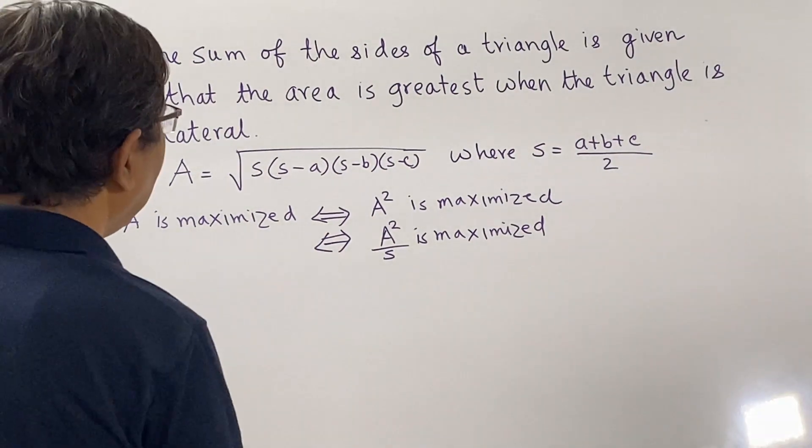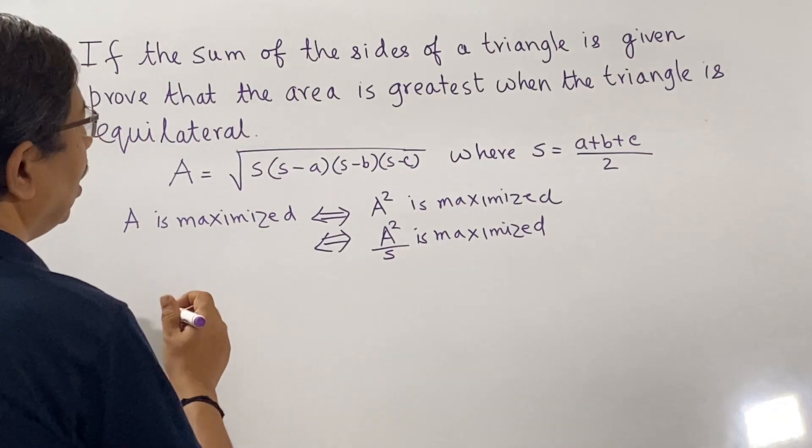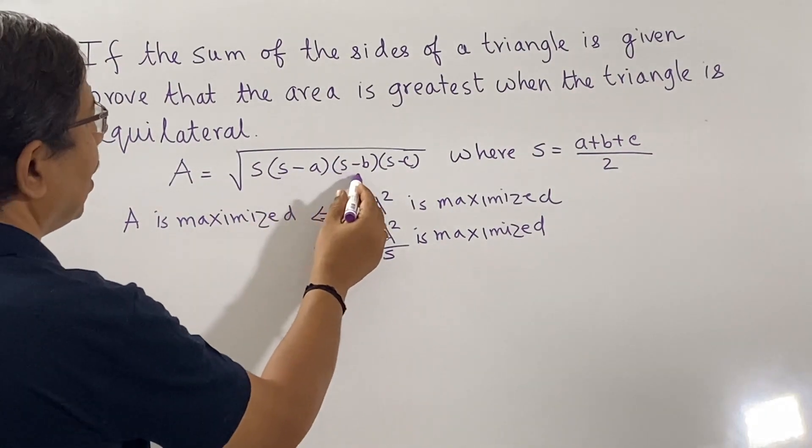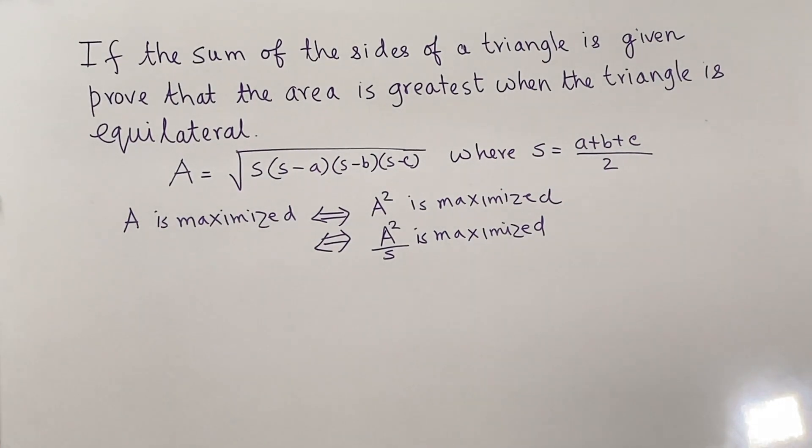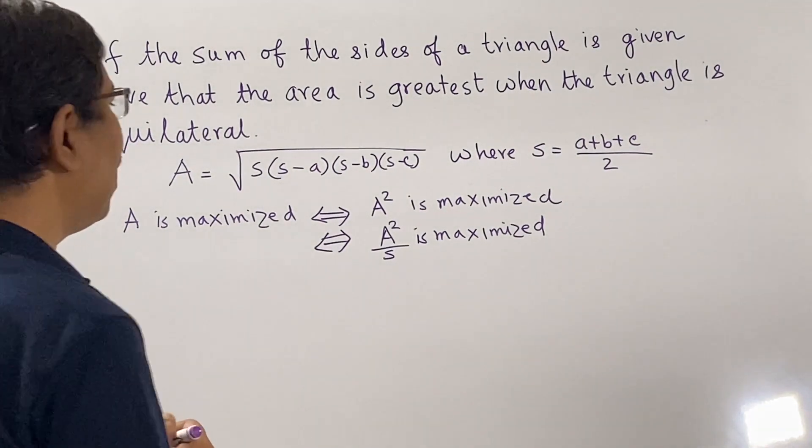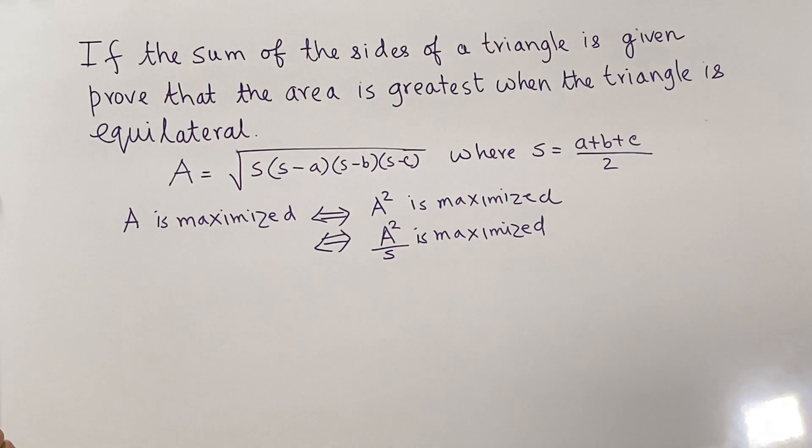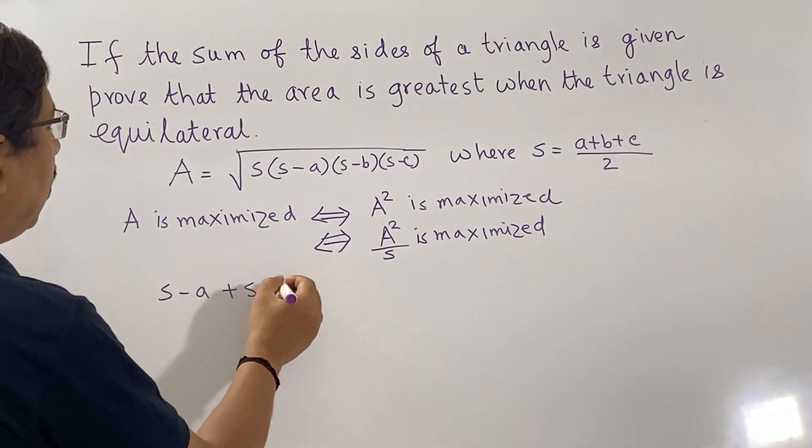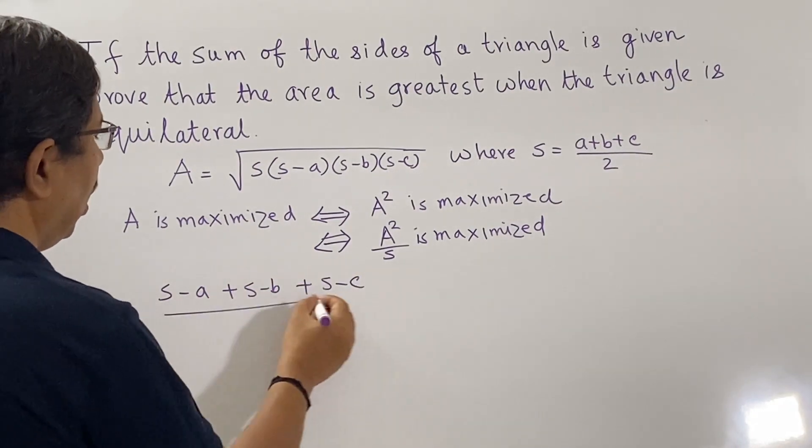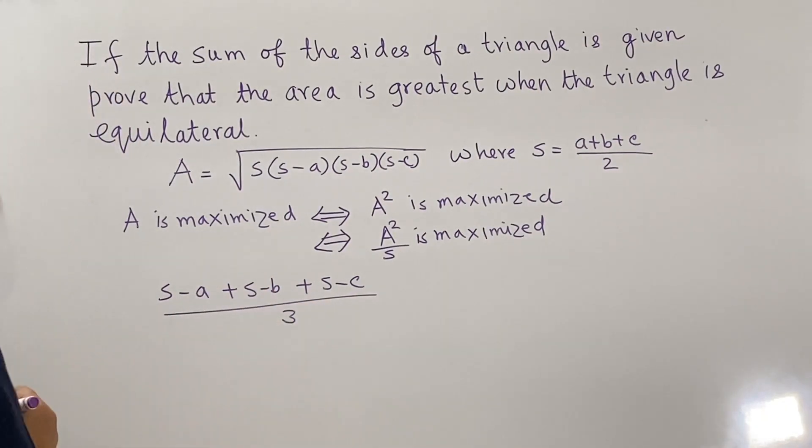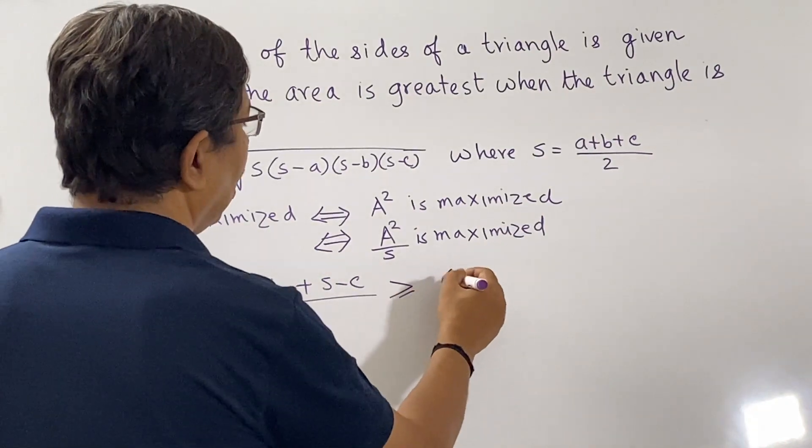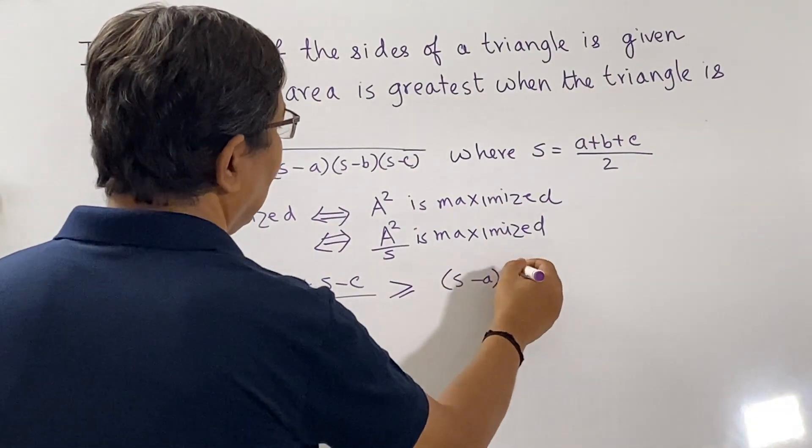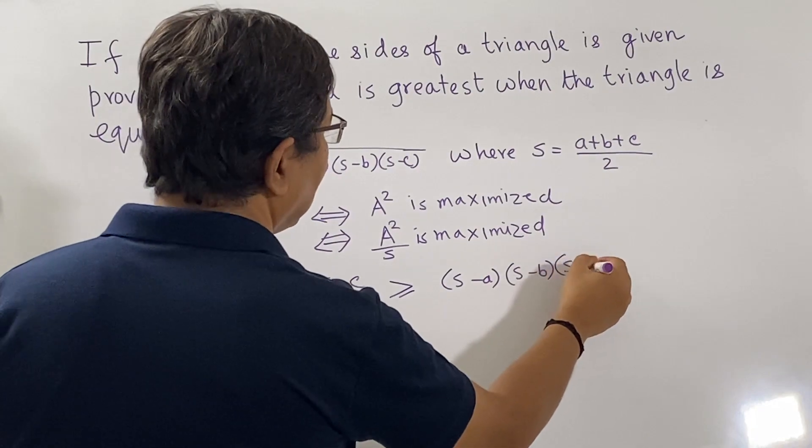Now we apply the AM-GM inequality on these quantities S minus A, S minus B, and S minus C. These are all positive quantities as the sum of two sides of a triangle is greater than the third. So (S-A) plus (S-B) plus (S-C) divided by 3, this is the AM of these three quantities, is greater than or equal to the cube root of (S-A) into (S-B) into (S-C).